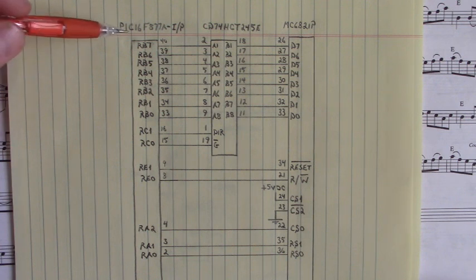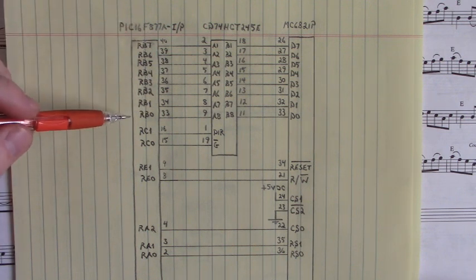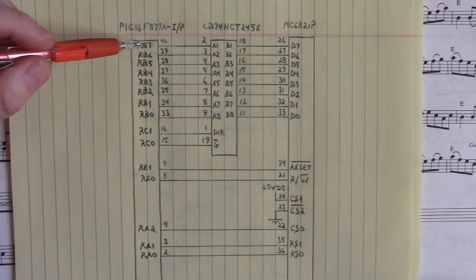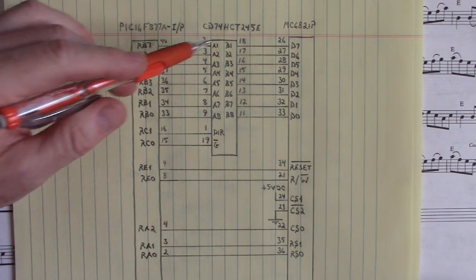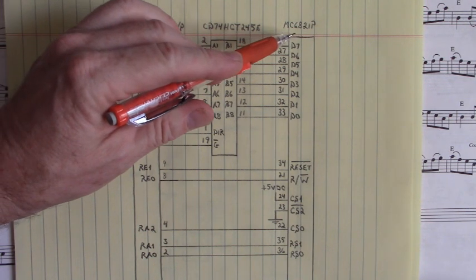Now here's port B, RB0 to RB7, and I'm using that as the data bus for the MC6821P.